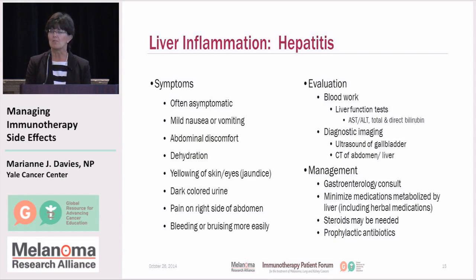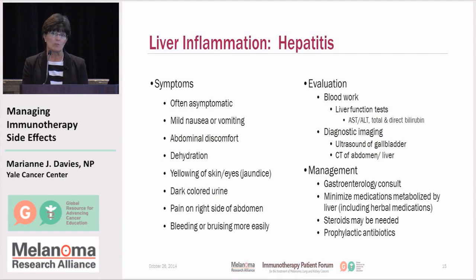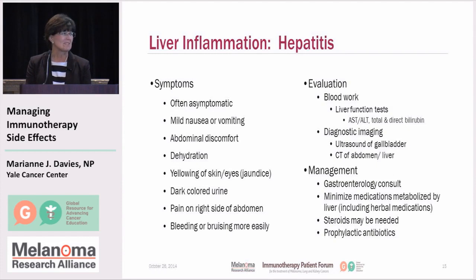Patients might complain of very mild nausea or mild abdominal discomfort, but typically that is really the extent of it. If it did progress, you might develop jaundice or yellowing of the sclera of the eyes or yellowing of the skin, but normally we're going to identify it before it gets to that point.